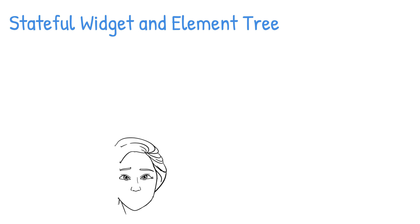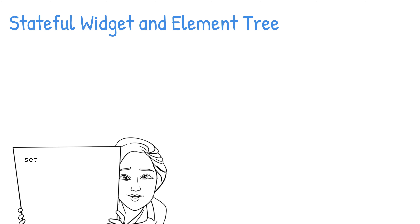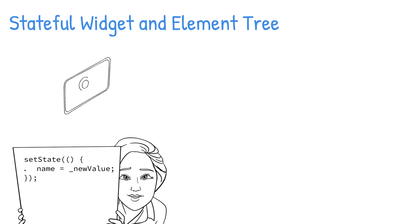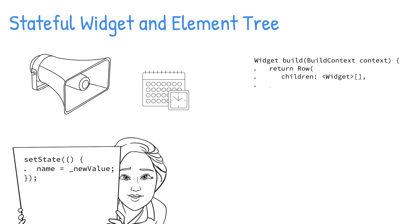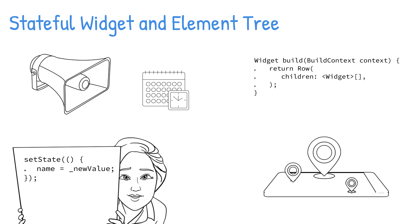To update the UI with new data, you call the setState method. To set the new data values, like properties and variables, call the setState method to update the state object. The state object marks the element as dirty — meaning it has changed — and causes the UI update to be scheduled. The stateful element calls the state object's build method to rebuild the children widgets. A new widget is created with the new state value, and the old widget is removed.